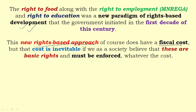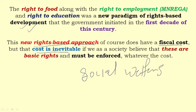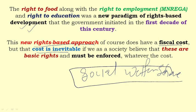Some people said this approach has a fiscal cost, but cost is inevitable. Because if we as a society believe there are basic rights — food, employment, education — that must be enforced whatever the cost, then the government must provide them. Social welfare schemes are good for society because they fulfill the fundamental, basic rights of human beings.